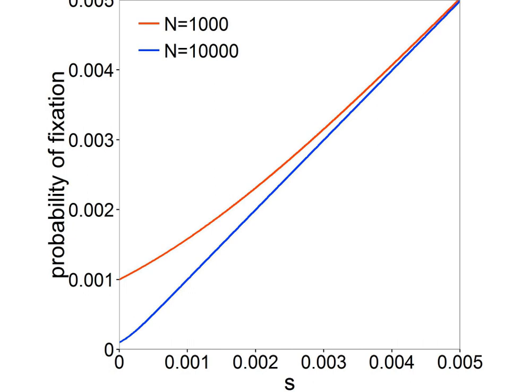According to the neutral theory of molecular evolution, the rate at which molecular changes accumulate between species should be equal to the rate of neutral mutations and hence relatively constant across species. However, this is a per-generation rate. Since larger organisms have longer generation times, the neutral theory predicts that their rate of molecular evolution should be slower.